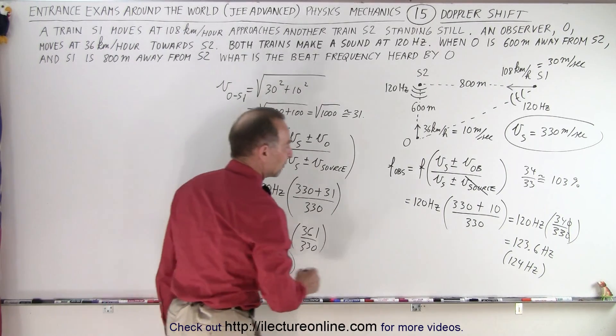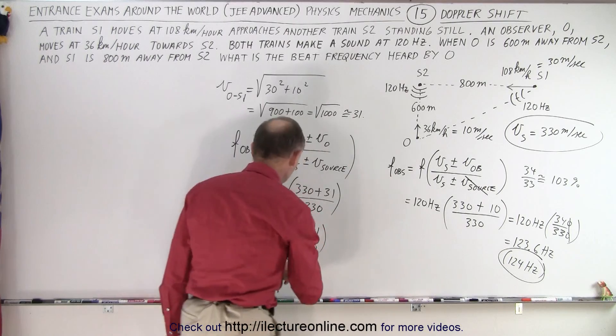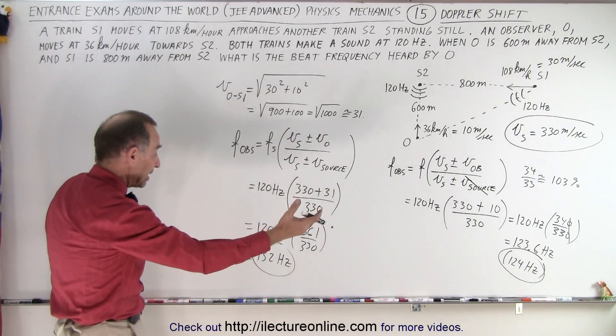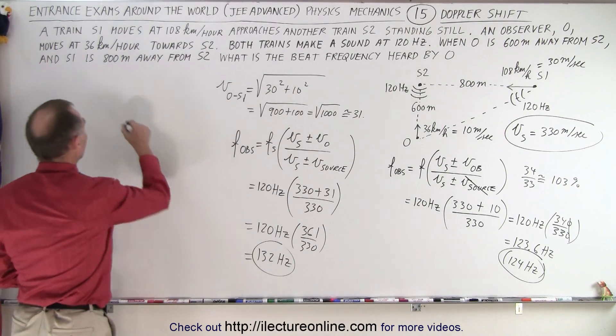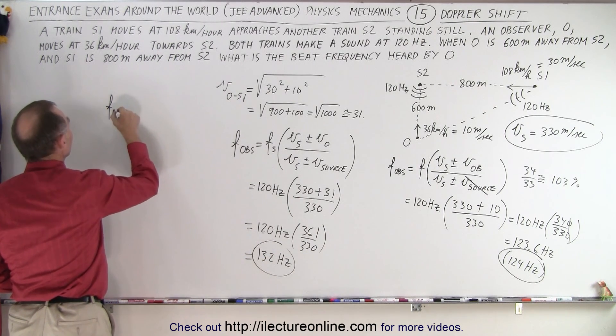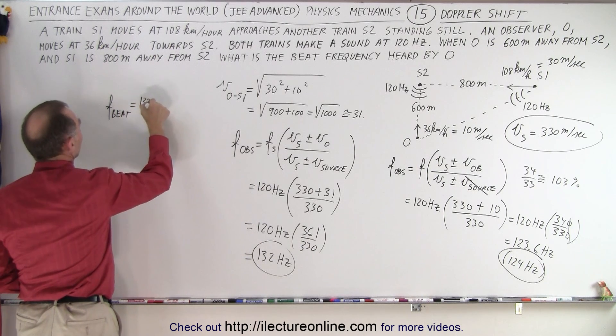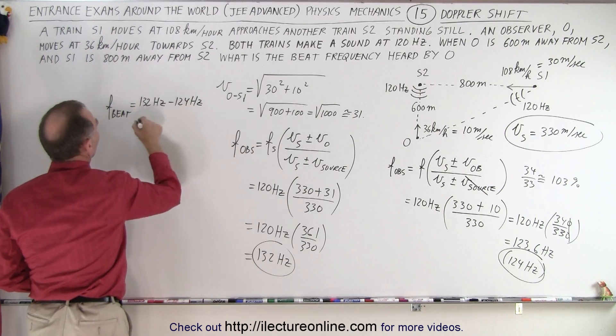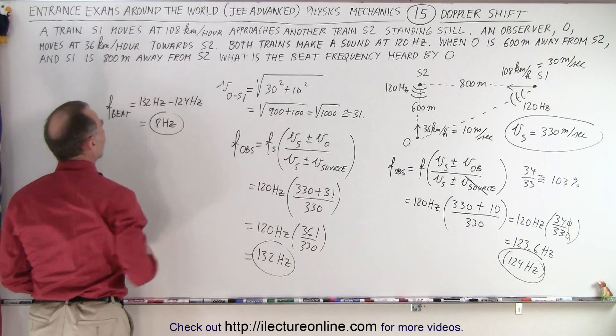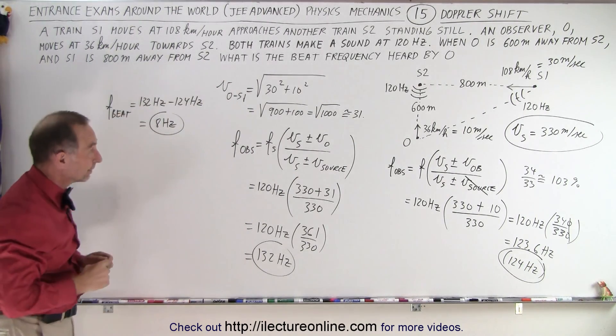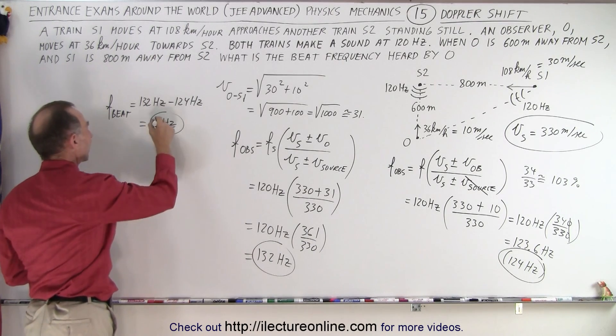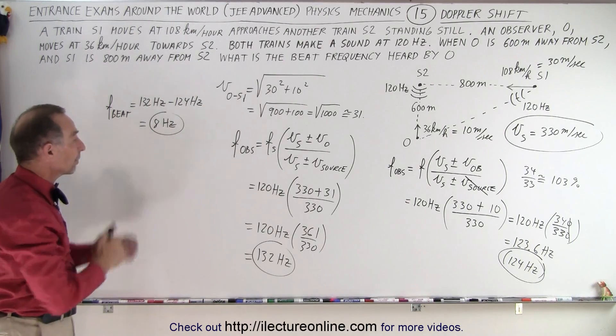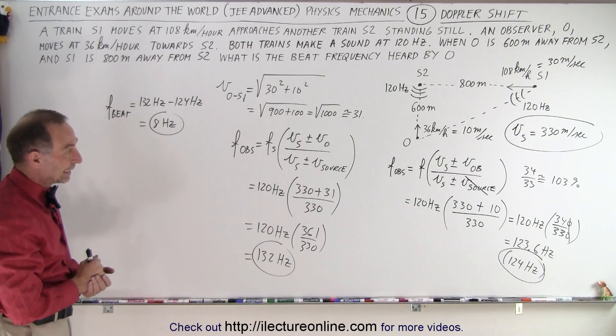So we have 124 hertz and 132 hertz from the two different sources. And of course, the beat frequency is going to be the difference between the two. So we can say that frequency of the beat is going to be equal to 132 hertz minus 124 hertz. So that's about 8 hertz. And that's pretty close to the correct answer. Of course, without a calculator, it'd be hard to get the exact answer. But we're in the ballpark and that indeed was an acceptable correct answer for this particular problem.